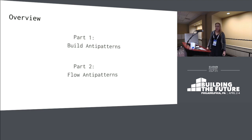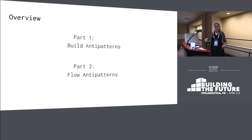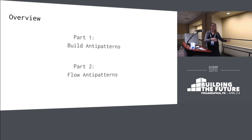The talk is split into two parts. Part one is mostly about build anti-patterns — things that can go wrong in an individual job or task. Part two is flow anti-patterns — things that you can do wrong connecting your pipelines together. Connecting pipelines together is an important part of pipelines.